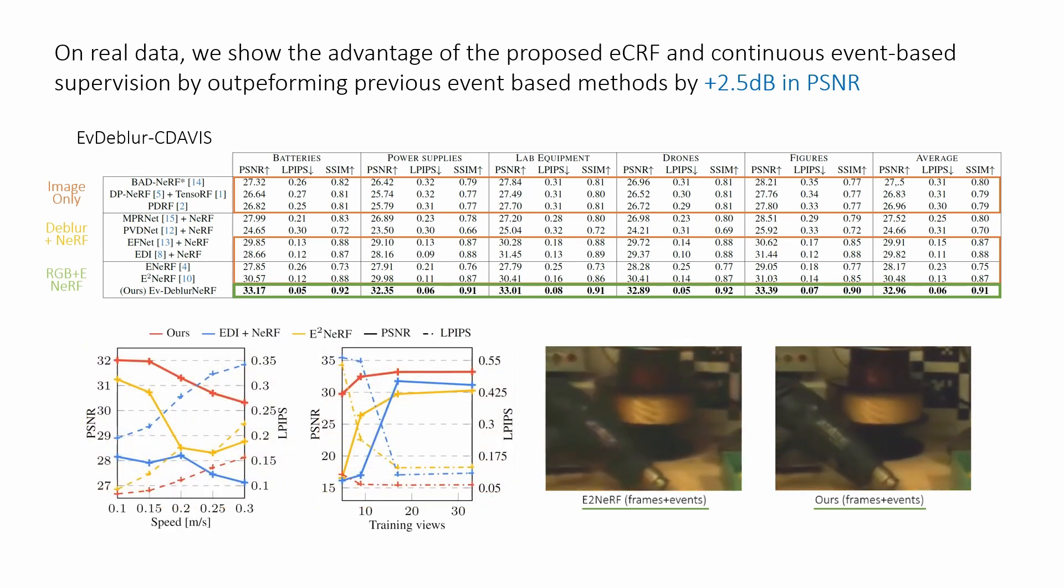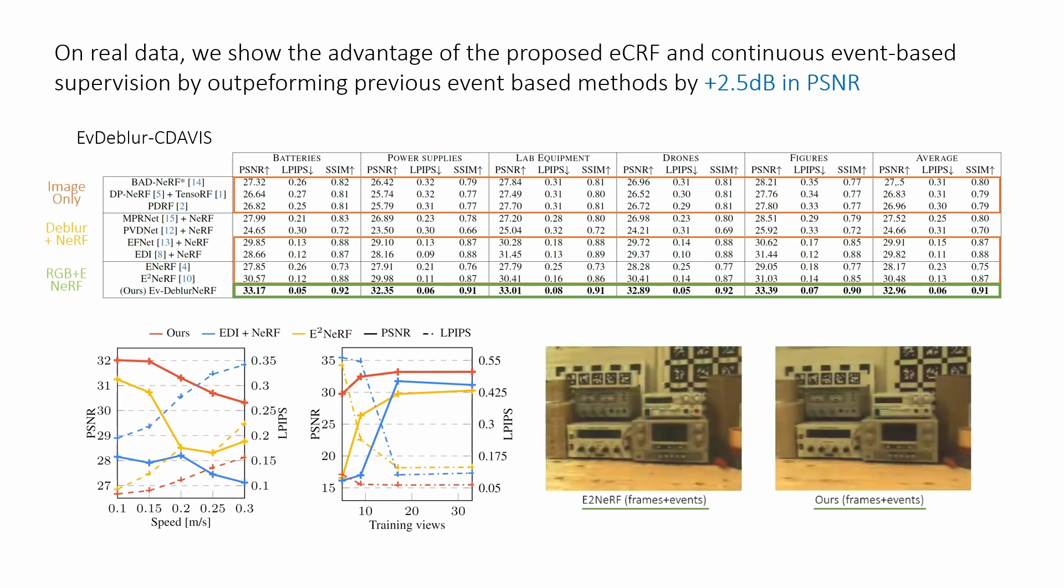Additionally, we demonstrate that exploiting events even outside of the exposure time leads to better results across different speeds, as well as when only a few images are available for training.